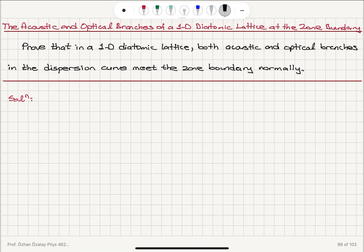We have to recall from class notes: at the first Brillouin zone boundary, k equals π/a, we have the following dispersion relation.